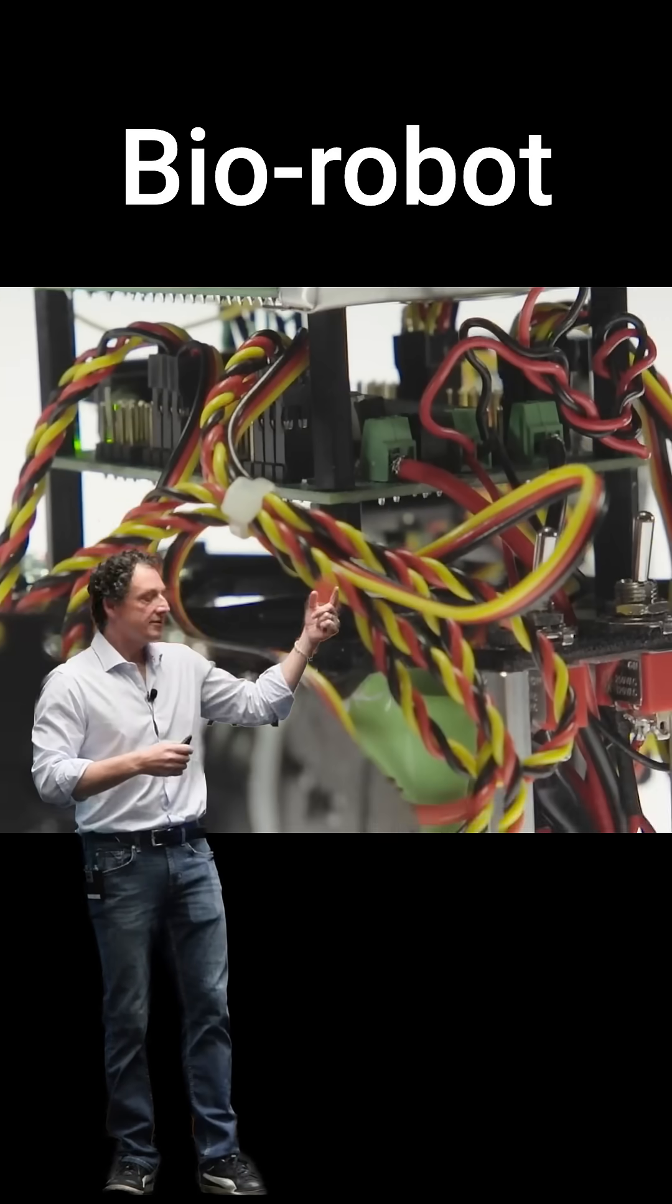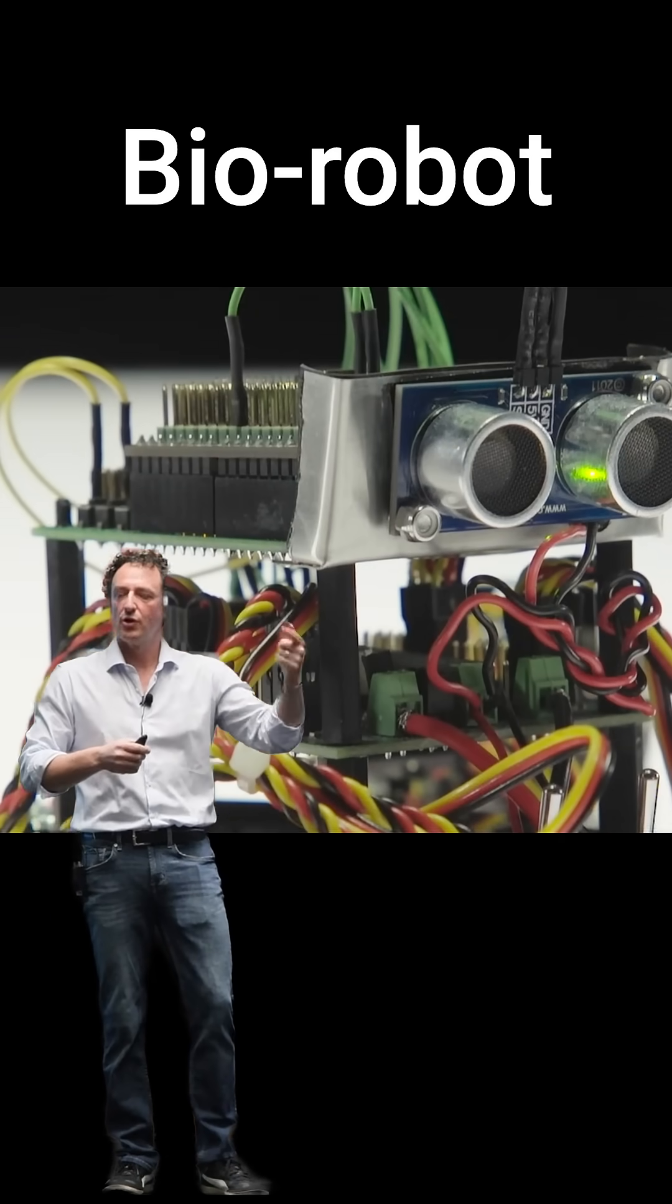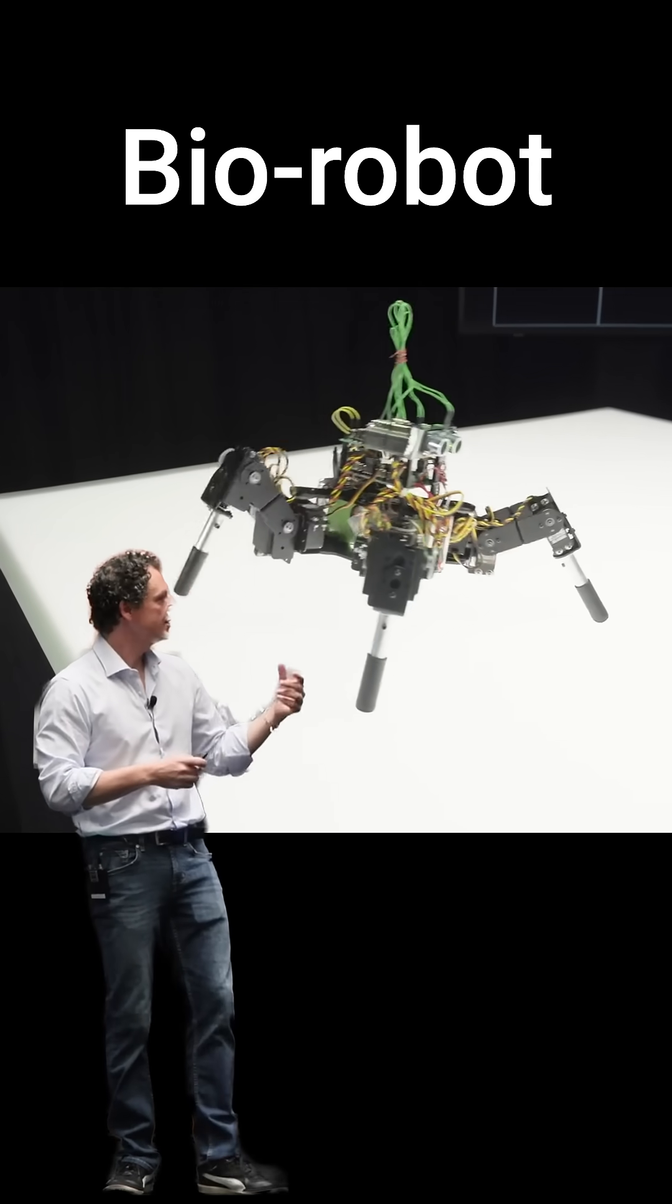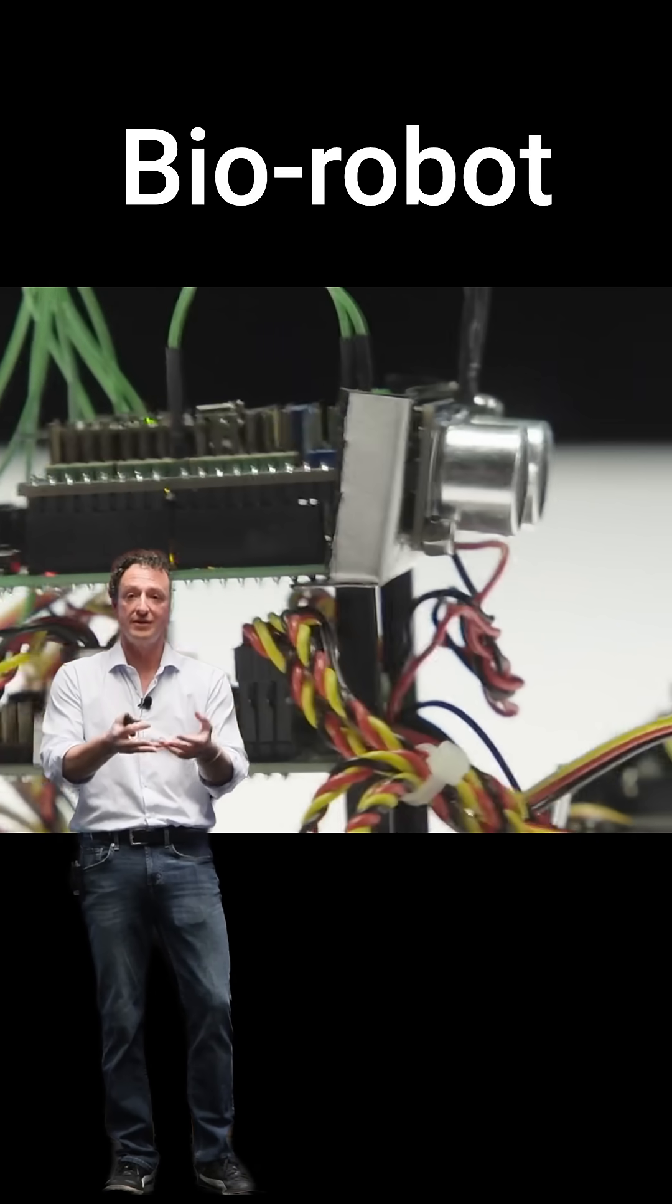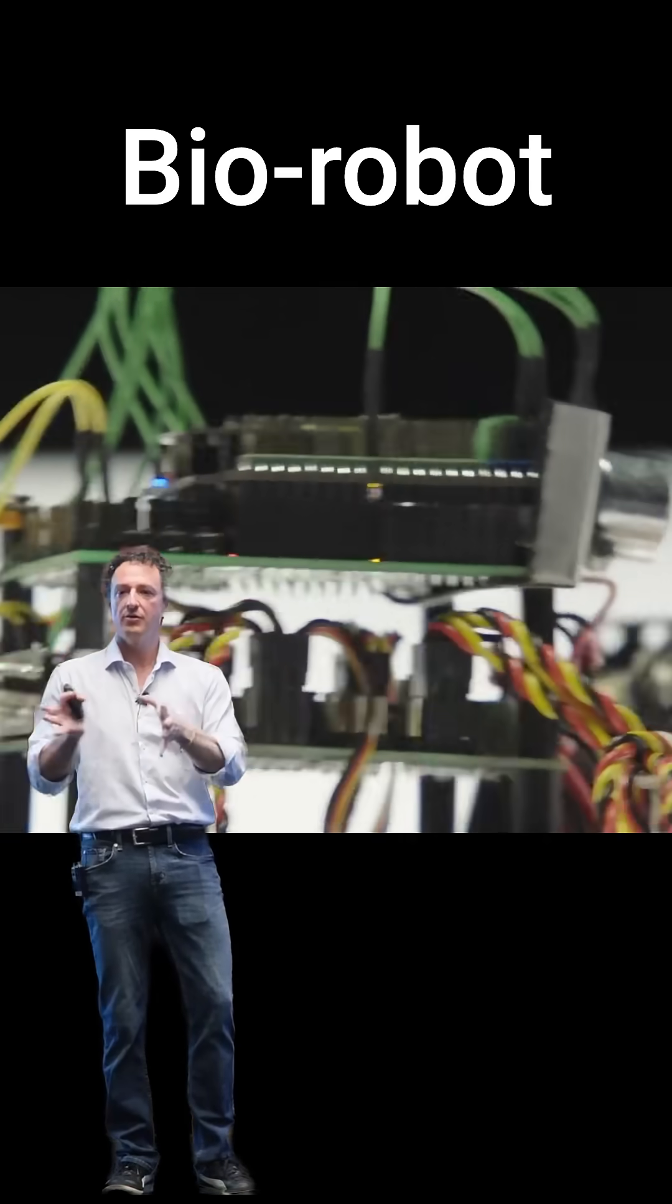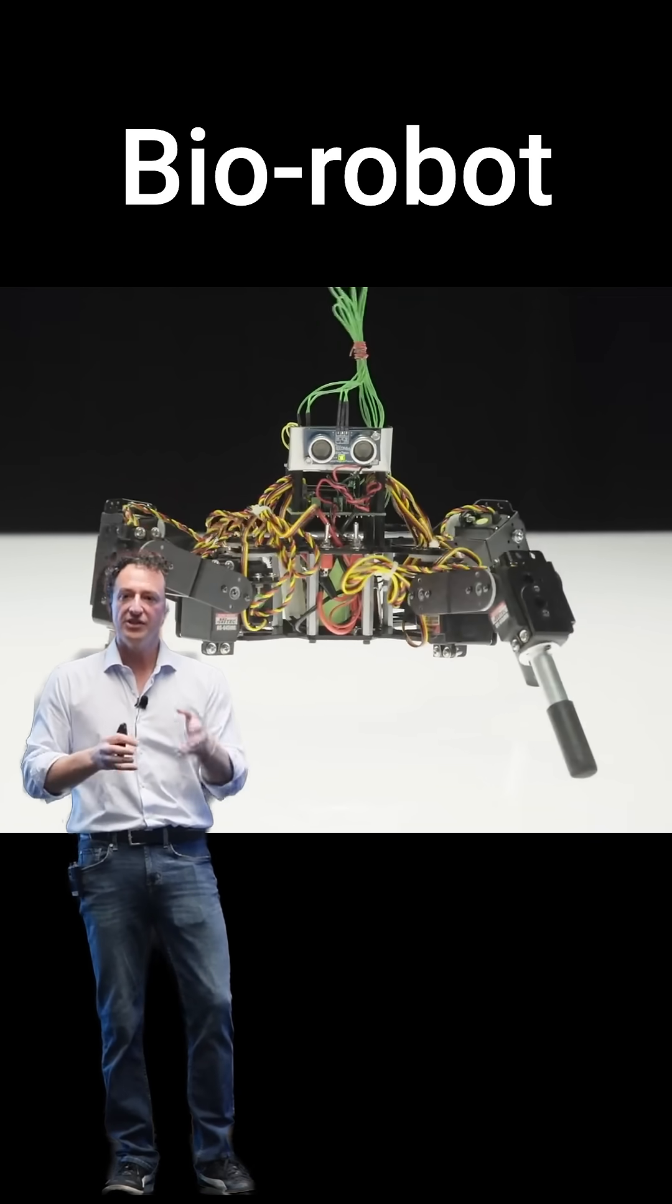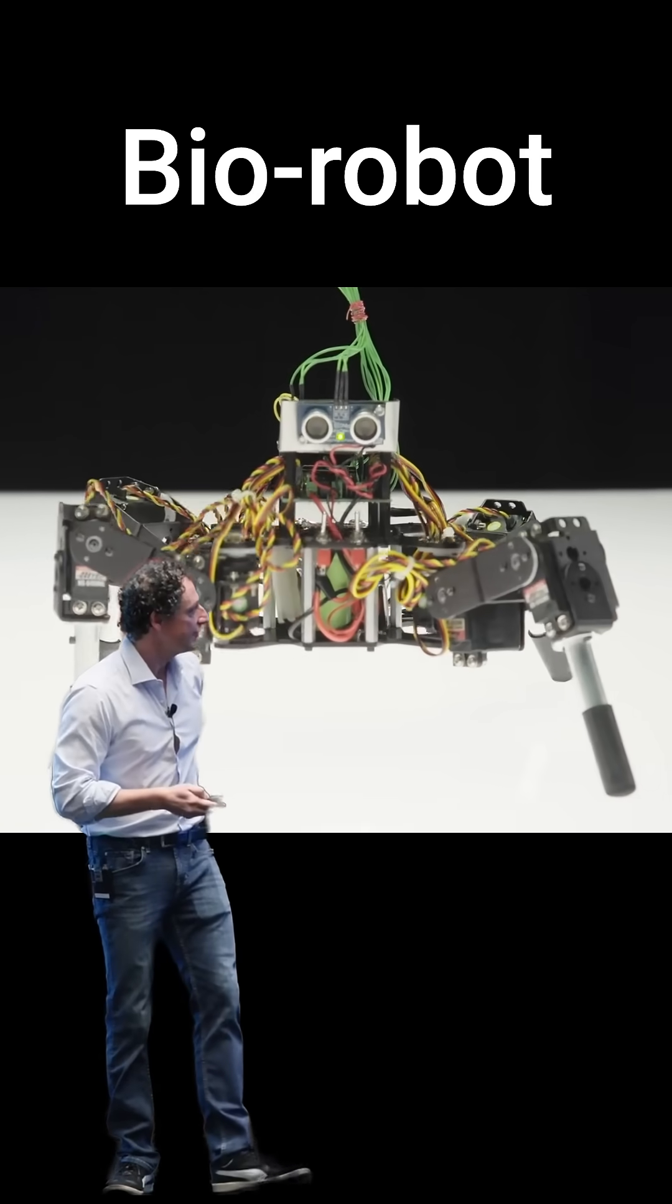By teaching these organoids how to move this robot, we are teaching them how to avoid obstacles. We can now place this robot in different mazes and see how they react. This is by learning just once, and they can do that quite efficiently.